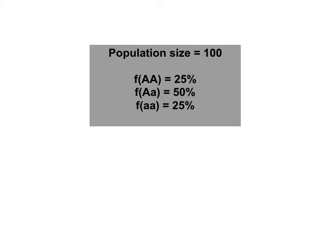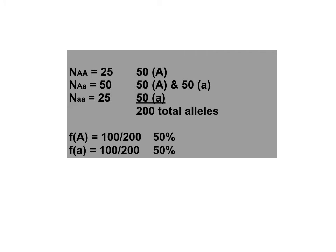Say I describe a population where N equals 100, and the genotypic frequencies are 25% for big A big A, 50% for big A little a, and 25% for little a little a. Given these genotypic frequencies and the population size, could you calculate the allele frequencies? The answer is yes. You multiply the genotypic frequency by the total number of individuals to get the count for each genotype: 25 big A big A, 50 big A little a, and 25 little a little a.